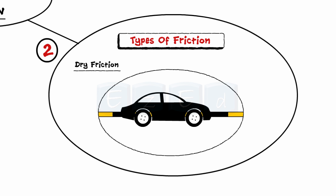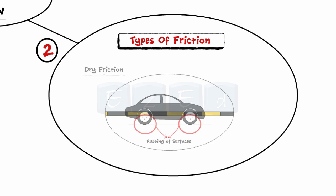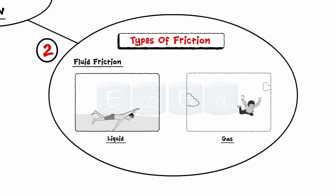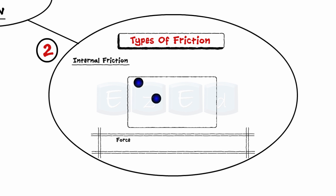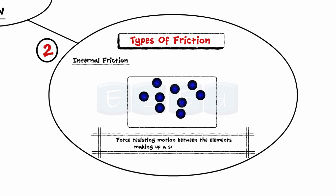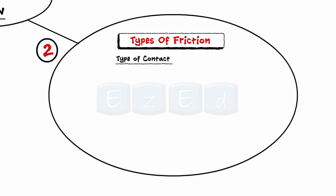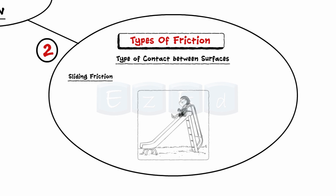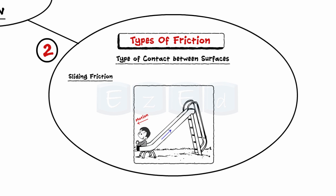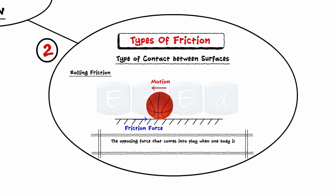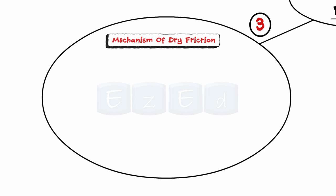Dry friction occurs when un-lubricated surfaces of two rigid bodies are in contact under a tendency of rubbing of surfaces. Fluid friction occurs when an object moves through a fluid, meaning either a liquid or gas. Internal friction is the force resisting motion between the elements making up a solid material. Friction can also be divided into sliding friction — observed when there is a sliding contact between two surfaces — and rolling friction, defined as the opposing force that comes into play when one body is actually rolling over the surface of another. We also learned the mechanism of dry friction in detail.